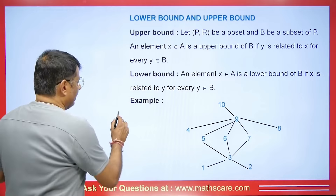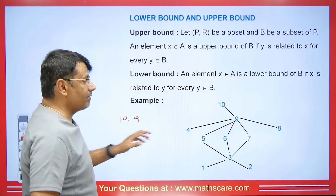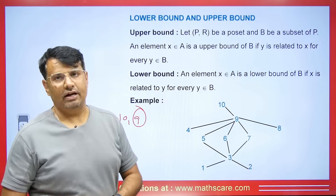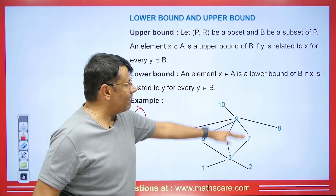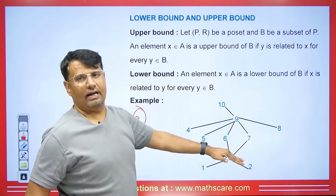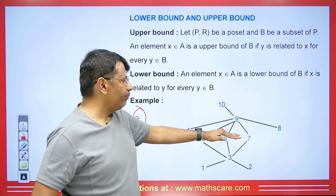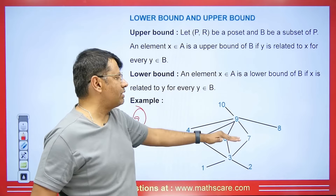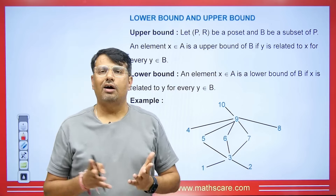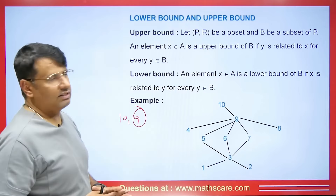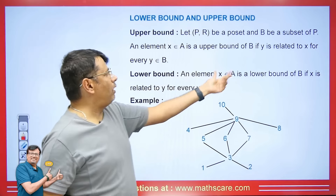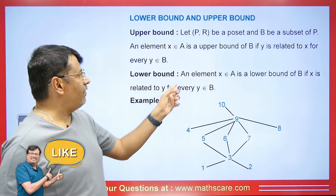If asked the upper bound of 3, it can be 5, 6, 7, 9, or 10. In exams, you may be asked about the least upper bound. For 5, 6, 7 — we have two upper bounds: 9 and 10. The least upper bound will be 9. The upper bound means whatever is in our Hasse diagram to which it's connected — the element just above it that it's relating to will be the upper bound.